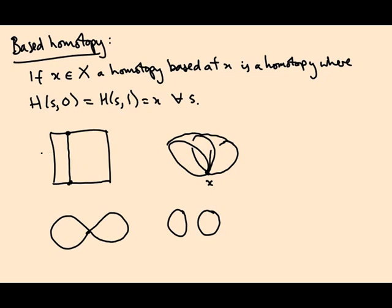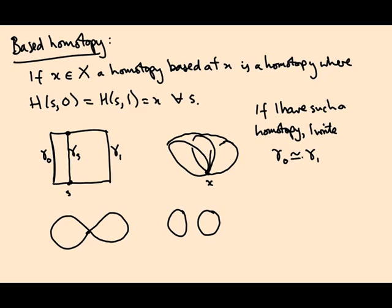So again we're going to think of this as a family of paths or family of loops starting at gamma_0, which is what I get at s=0, going through gamma_s which is here at some fixed value of s, and then ending up at gamma_1. And if I have a homotopy like this, I write gamma_0 is homotopic to gamma_1 with a little squiggly line.